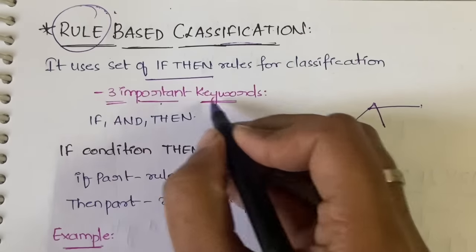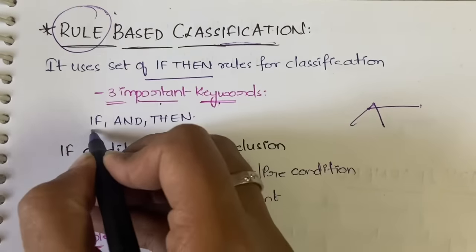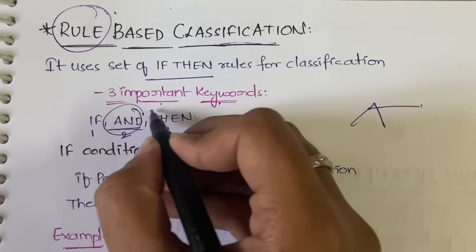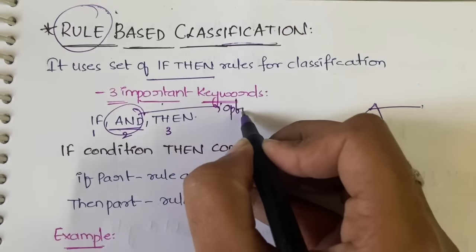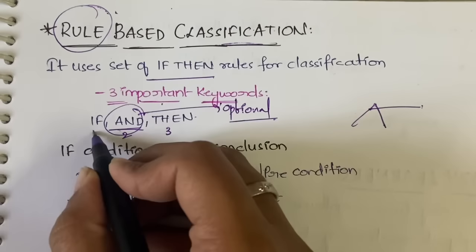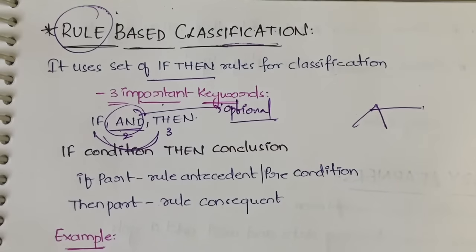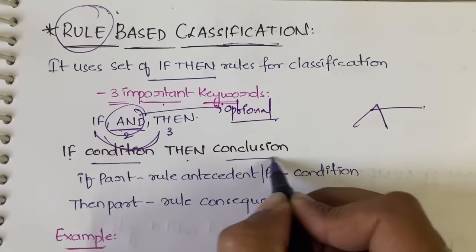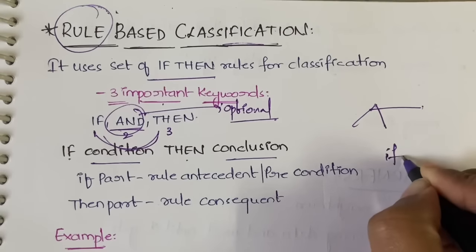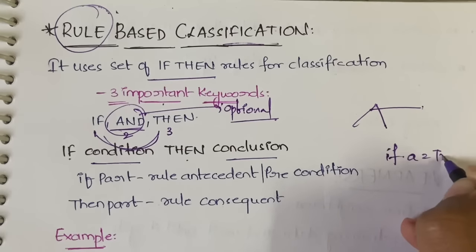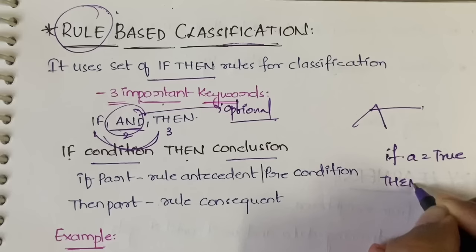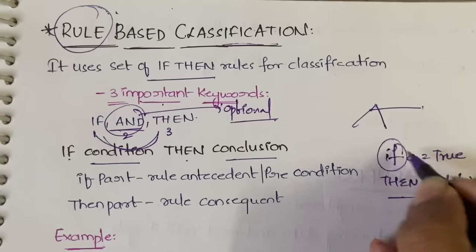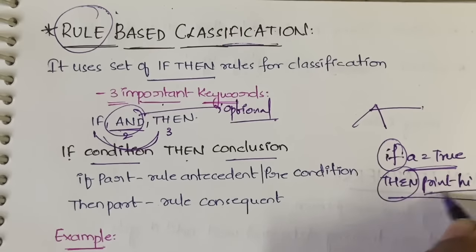The three important keywords are: if, and, and then. 'And' is optional and you won't find it in all the rules, but 'if' and 'then' will be in all the rules. So if a condition is specified, then a conclusion is specified. For example: if A is equal to true, then print high — that is, if a condition, then a conclusion.